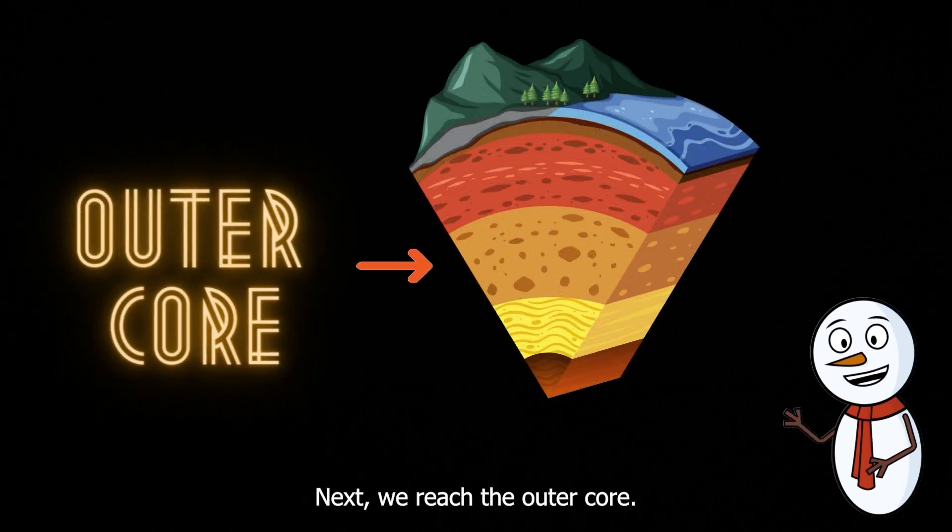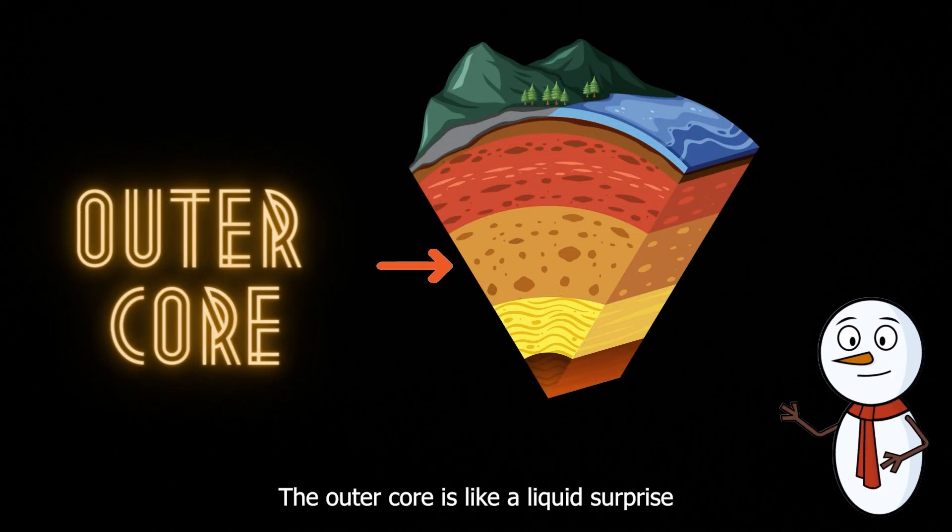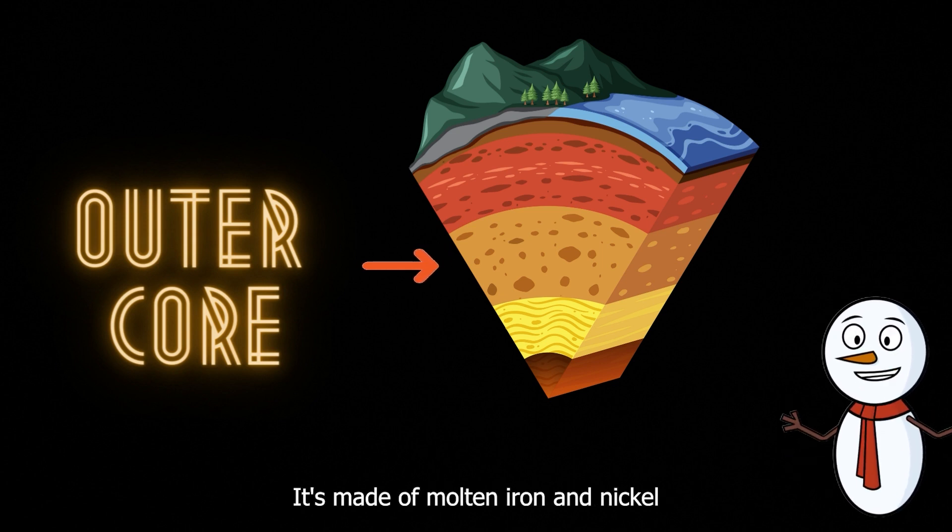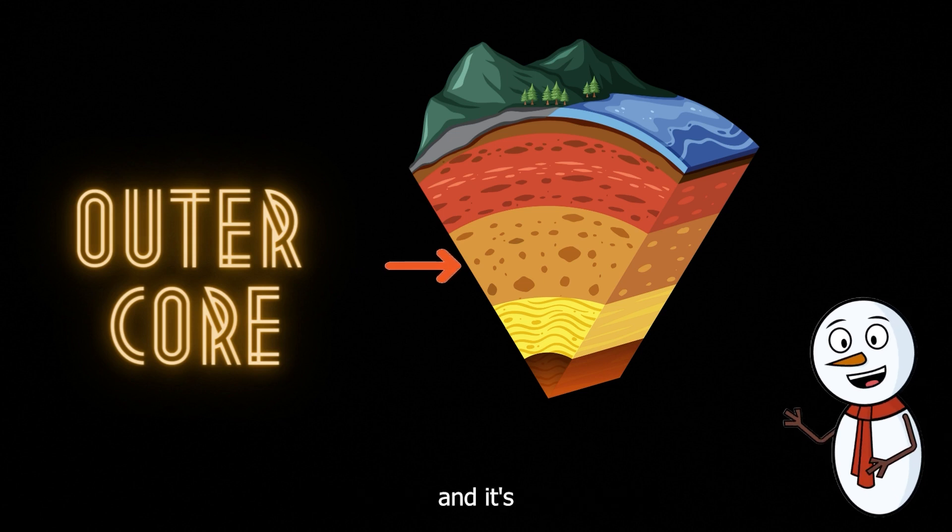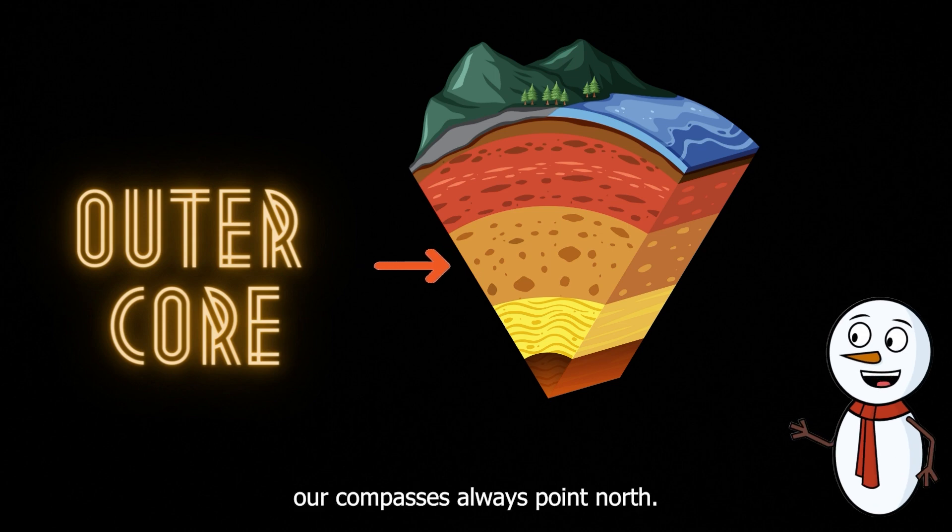Next, we reach the outer core. The outer core is like a liquid surprise beneath the Earth's surface. It's made of molten iron and nickel, and it's responsible for Earth's magnetic field. That's why our compasses always point north.